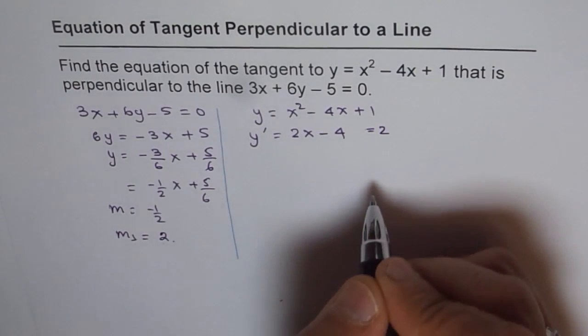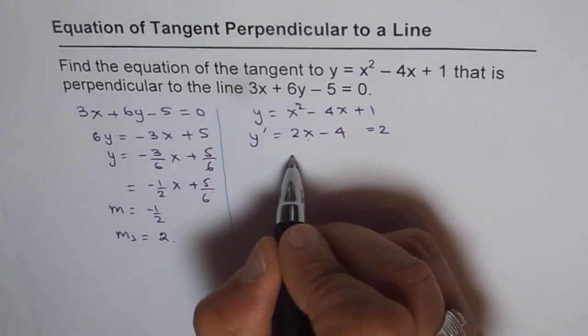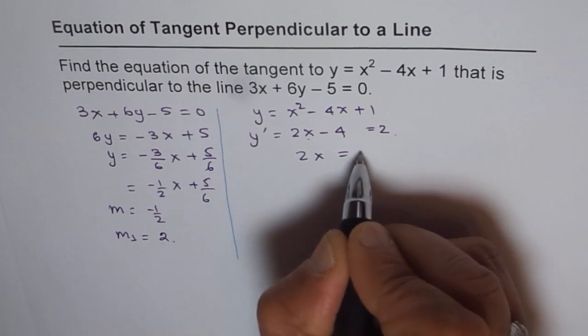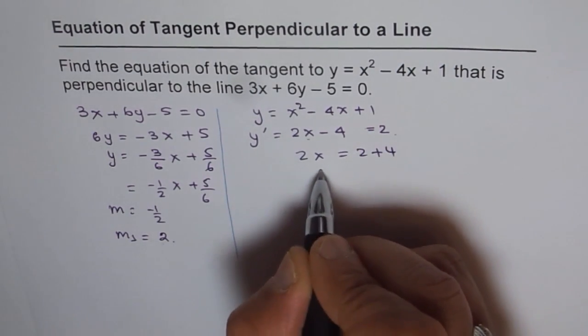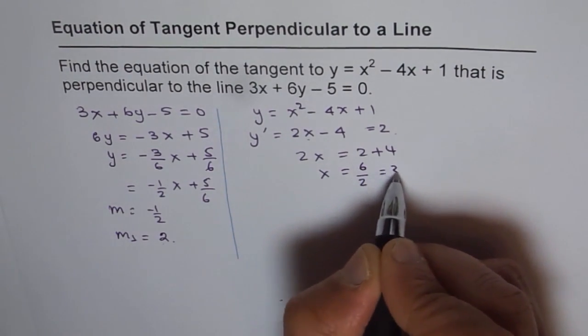So we'll equate it to 2 and find the value of x. So x will now be equal to, we'll take 4 on this side, equals 2 + 4. So x equals 2 + 4 is 6 divided by 2, that is 3.